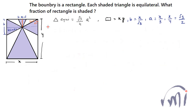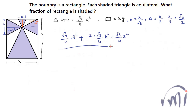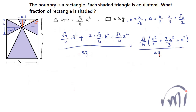Now we find what fraction of the rectangle is shaded. The shaded area equals the area of the small triangle (√3/4)·a² plus 2 times the area of the congruent side triangles (2·(√3/4)·b²) plus the area of the large triangle (√3/4)·x², all divided by xy. Taking (√3/4) common, inside the bracket we have a² = x²/9, plus 2b² = 2x²/3, plus x², divided by xy.